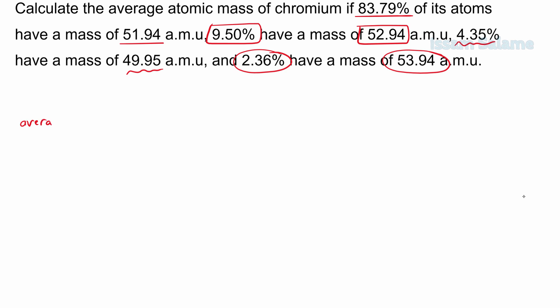As you can see, I'm highlighting the percentage with its mass with a different mark, so I'm not confused when I'm doing the calculation. So to find the average atomic mass of chromium, you have to multiply each mass by its percentage, put them in a bracket, add them all and divide by 100.